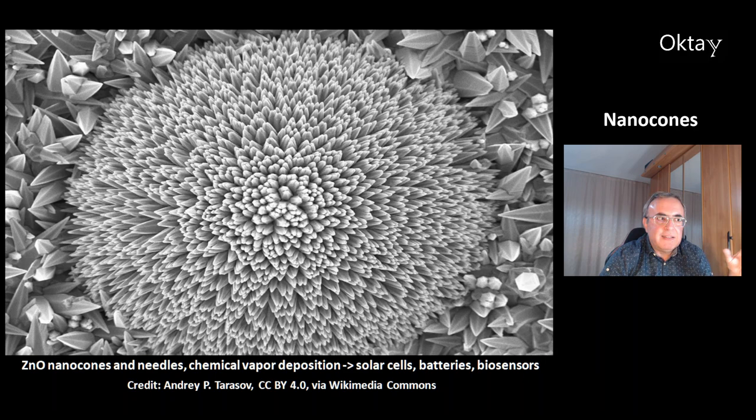This is another nanocone picture of zinc oxide, again with needles. These nanocones can be made with the method of chemical vapor deposition (CVD). These compounds are very interesting for solar cells, batteries, and biosensors.